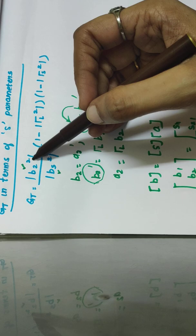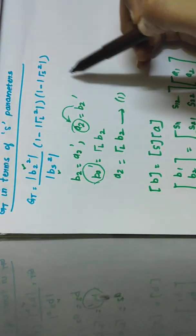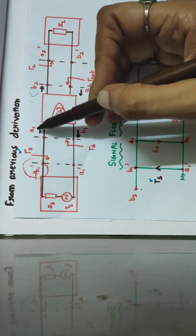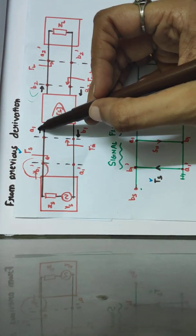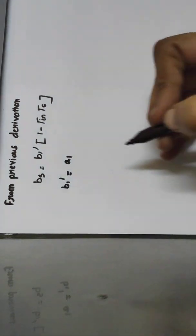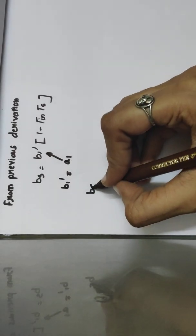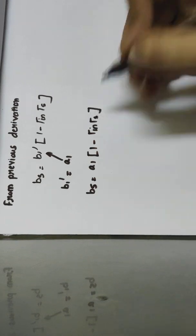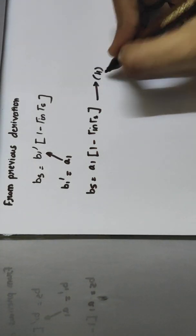Now we need to find Bs. From the previous derivation, Bs was equal to B1-dash · (1 - ΓS²). From the block diagram, B1-dash is similar to A1, so B1-dash equals A1. Substituting, Bs becomes A1·(1 - Γin·ΓS). Let this be equation number 4.